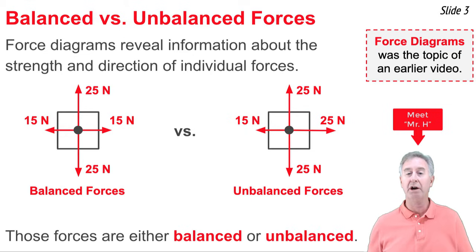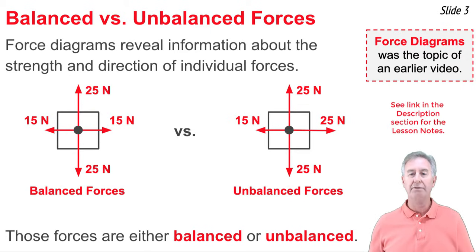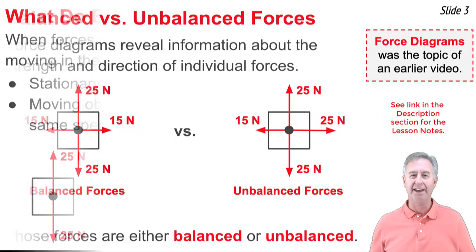When we look at force diagrams, we can figure out whether the forces are balanced or imbalanced. The one on the left is balanced. If we look at the diagram on the right, we notice something quite different. While the up and down forces balance each other out, the right and left forces are unbalanced. The right force of 25 newtons is not perfectly balanced by the left force of 15 newtons. We would say there's a net force to the right, and these forces are unbalanced. This is an important question to answer — are the forces balanced or unbalanced — because it helps us determine how the object will subsequently move.